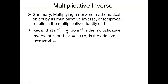Recall that a to the negative 1 is the same as writing 1 over a — that was the definition of negative exponents from the first module. This is an important distinction: a to the negative 1 is 1 over a, and 1 over a times a is 1, so a to the negative 1 is the multiplicative inverse of a. Whereas negative a, which is negative 1 times a, is the additive inverse of a. When the negative 1 is in the exponent, you get multiplicative inverse. But if you are multiplying the object by negative 1, you end up with additive inverse.